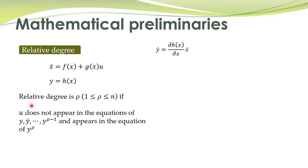To summarize, relative degree is rho if u does not appear in the equations of y, y-dot, up to the rho minus first derivative of y, and it appears in the equation of the rho-th derivative of y.